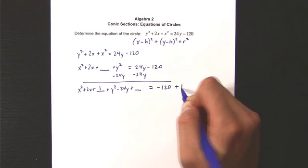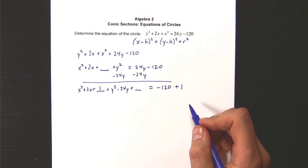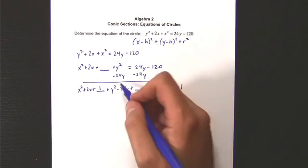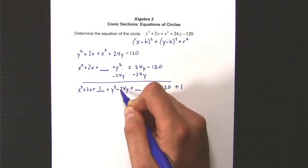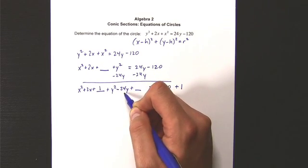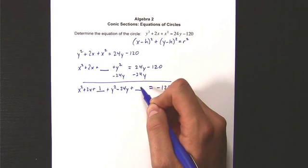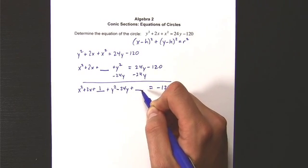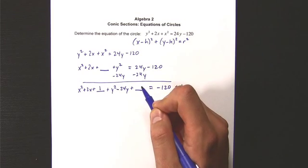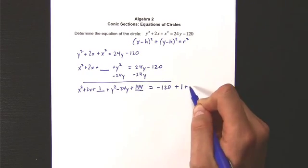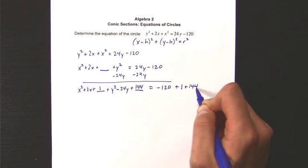On the other side, I better add 1 so I don't disrupt the balance between this side of the equation and this side. Now I look at this negative 24 and I say, what's half of negative 24? It's negative 12. Now, I don't know if you're up on your 12 times tables, but 12 times 12 is 144 and negative 12 times negative 12 is also 144. So you're going to add 144 to both sides.